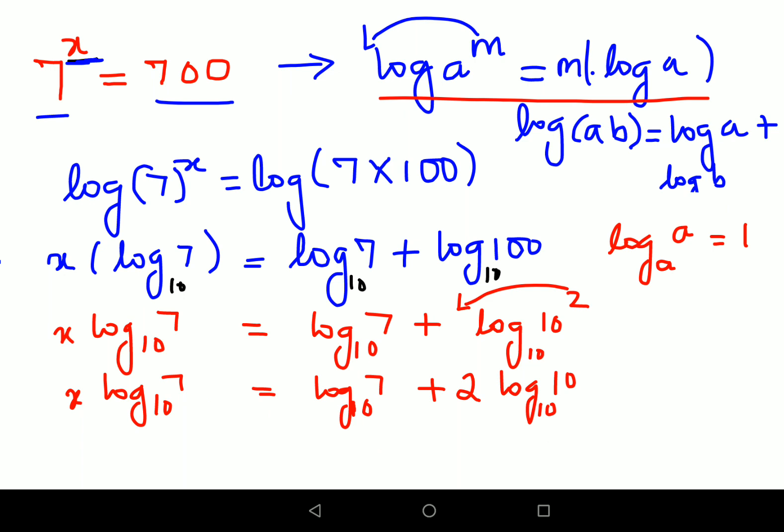This particular value now becomes just 1. So let's write this again: we have x log 7 to the base 10 equals log 7 to the base 10 plus 2 into 1.